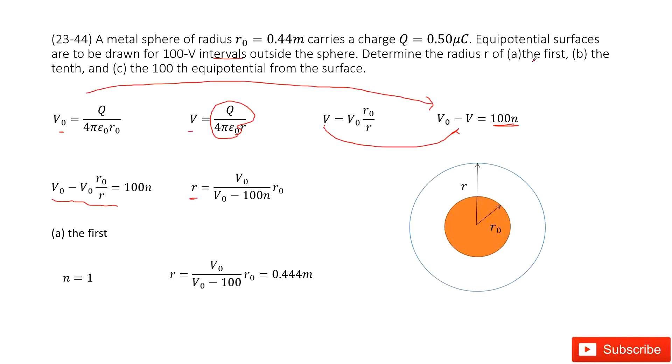First case, this is the first equipotential surface. That means n equal to 1. So we input n equal to 1 inside. We get the answer there. Just input all the given quantities.